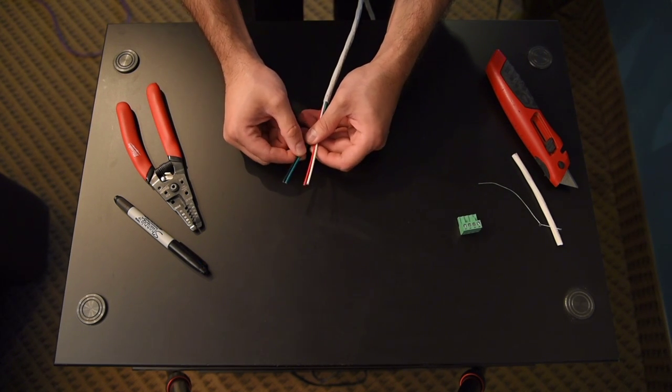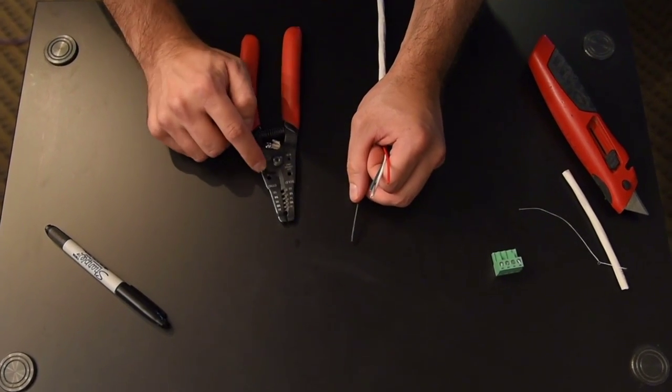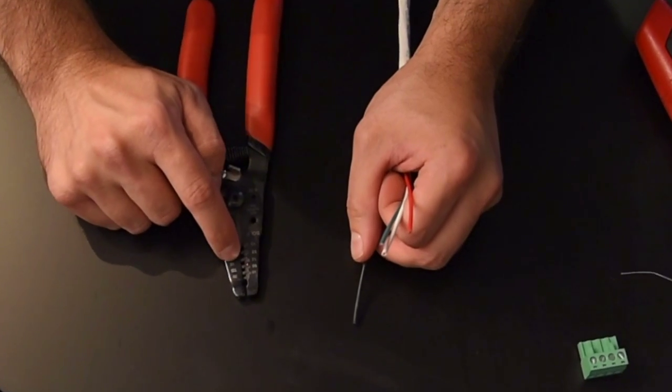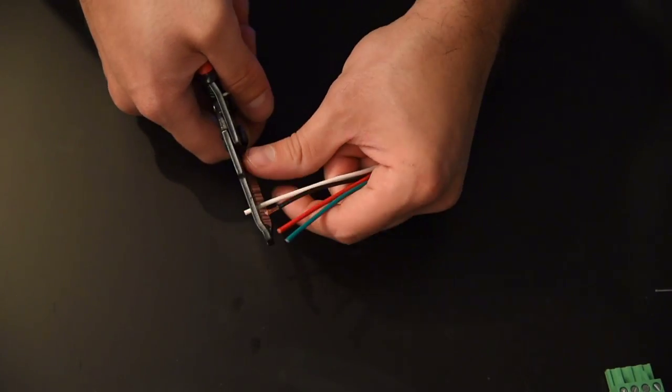And then if you're using 16 gauge cable, if you look at this wire stripper, it says stranded. 16 is right there. I want to go ahead and cut off a quarter of an inch off the end of the cable.